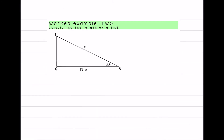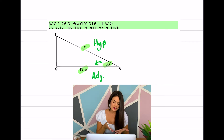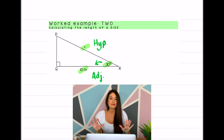Next example: triangle PQR. Identifying what I have — 30°, x, and 10 meters. Starting by identifying the hypotenuse as the side opposite the right angle, that's x. The 10 meters is now adjacent to the 30°. PQ is the opposite side relative to 30° and no information is given about PQ, so we leave it out.